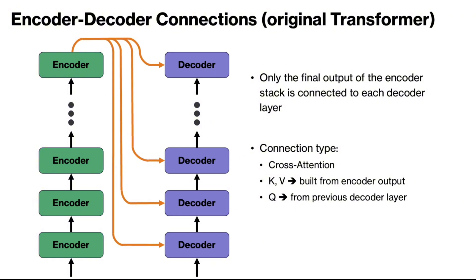In the original transformer, the final output of the encoder stack is connected to each decoder layer through cross-attention. The encoder output serves as a context representation of the input sentence in the source language. These representations are feature-rich and contain important information about the meaning and structure of the input sequence. Each decoder receives these representations and builds query vectors from their own representations to attend to the representations that come from the encoder.